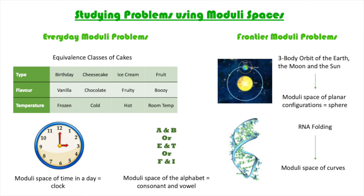Returning to the problems I proposed at the beginning: for the three-body problem, I can consider the three celestial bodies lying in the same plane. What I can study is the moduli space of planar configurations, which happens to be a sphere. Points on the sphere correspond to equivalence classes of configurations, and studying the sphere will tell us about the orbits.